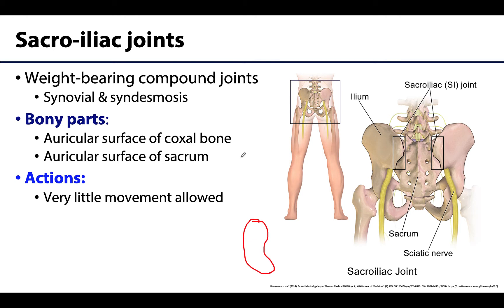What's interesting about the sacroiliac joints is that these are considered compound joints, meaning you really have two joints in one. In this case, you have two different structural types of joints in one area. You will have a synovial portion of the sacroiliac joint — the more anterior portion — and then this more posterior portion will actually be a syndesmosis. Think back to our joint basics: a syndesmosis is a fibrous joint.